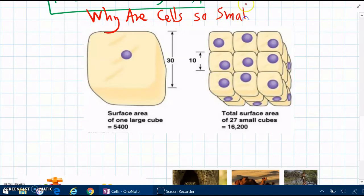Why are cells so small? Well, the main reason for that is because of nutrients and wastes.